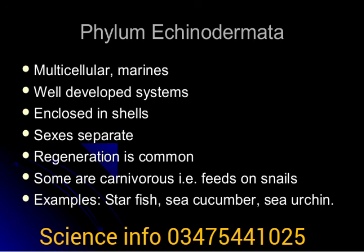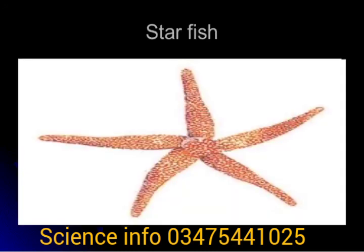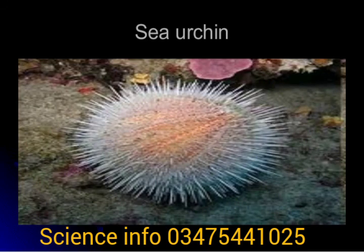Echinoderms have a complex system of tubes and tube feet for movement. Water circulates through the system. They have radial cleavage, and the blastopore forms the anus — making them deuterostomes. Examples are starfish, sea cucumber, and brittle star. They have certain common biochemical peculiarities.